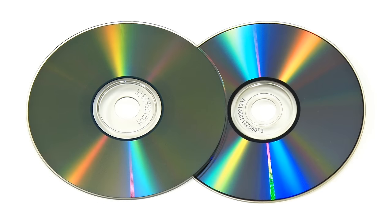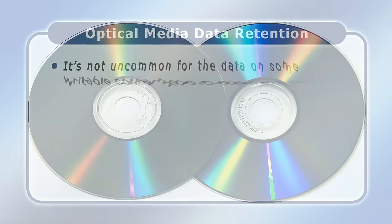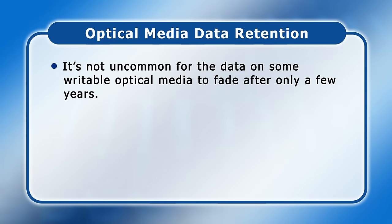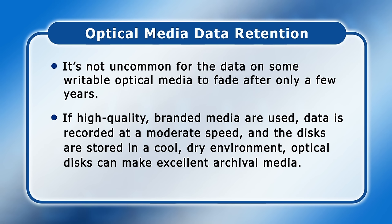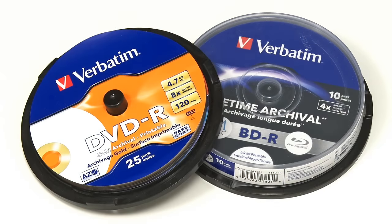Writable optical media record data by using a laser to change the properties of a layer of dye. Many different kinds of dyes and other materials can be used to make writable and rewritable CDs, DVDs and Blu-ray discs, all of which produce media with different data retention characteristics. It's not uncommon for the data on some writable optical media to fade after only a few years. However, if high-quality branded media are used, data is recorded at a moderate speed, and the discs are stored in a cool, dry environment, optical discs can make excellent archival media. For me personally, this generally means using Verbatim's gold archival media written at the lowest speed my software and drives support.